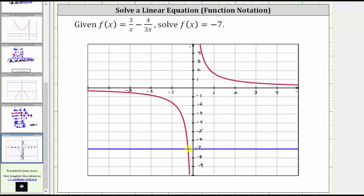It's a little hard to tell, but the ordered pair for this point is (-5/21, -7), which indicates when the x value or input is -5/21, the output or function value is -7. This point does verify our solution is -5/21.